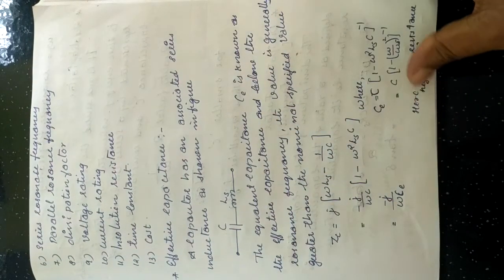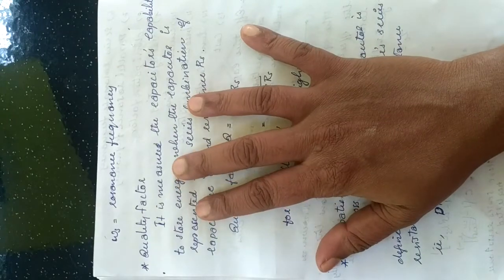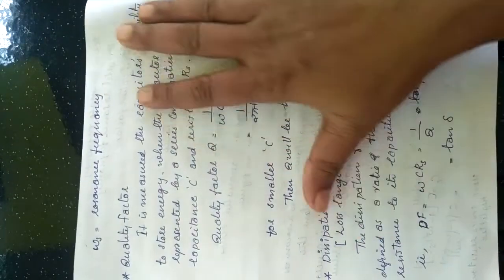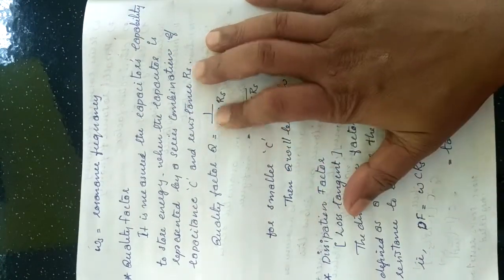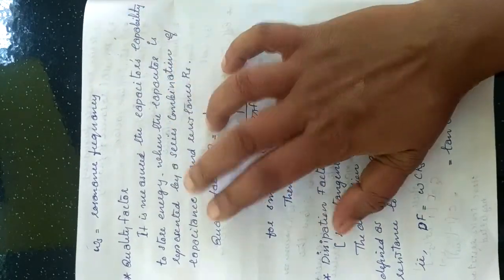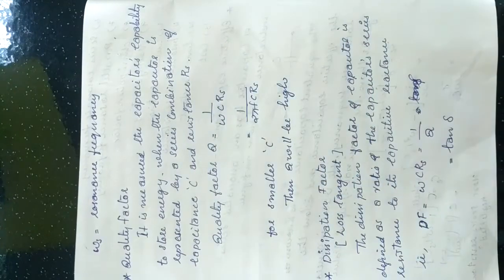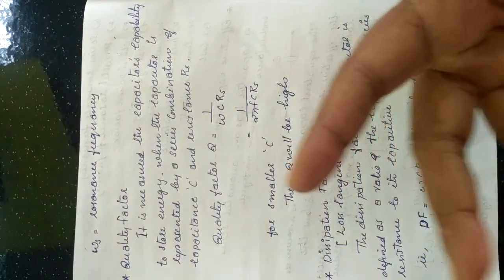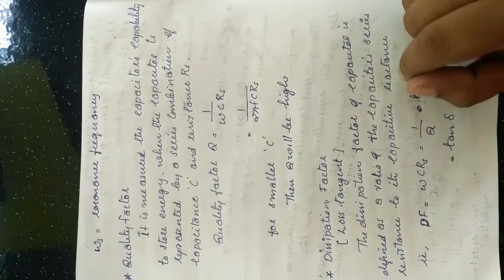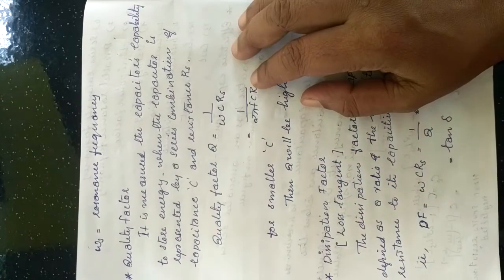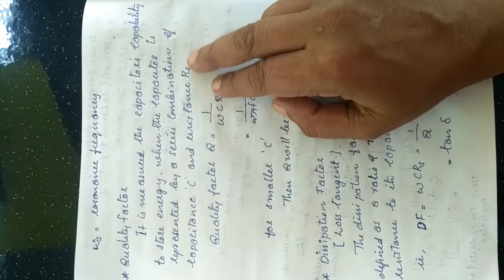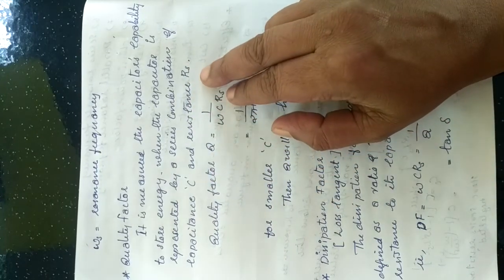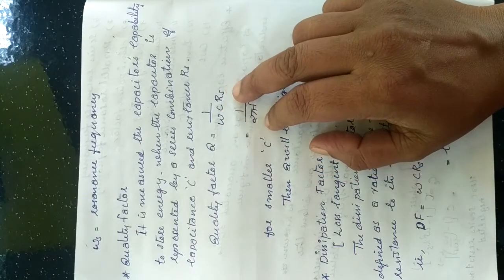This is the effective capacitance expression for a capacitor. The next parameter is the quality factor. For a capacitor, the quality factor measures the capacitor's capability to store energy. Whenever we discuss the quality factor, it depends on the capability to store energy within the capacitor. When the capacitor is represented as a series combination of capacitance C and resistance Rs, the quality factor becomes Q = 1/(ωCRs).